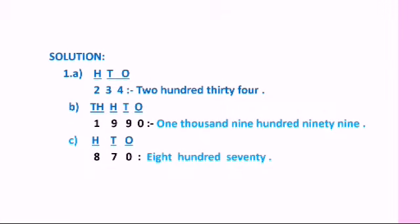Next, the number 1999 has 4 digits, so the highest place value is 1000. We write the places as thousands, hundreds, tens, and ones. So the answer is one thousand nine hundred ninety-nine. For the third number, 870 — HTO means hundreds, tens, and ones — so the answer is eight hundred seventy.